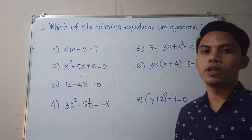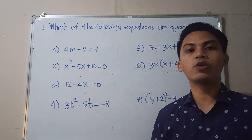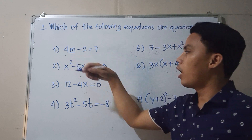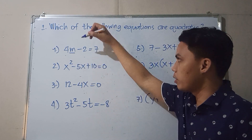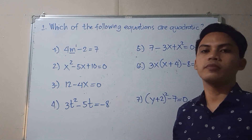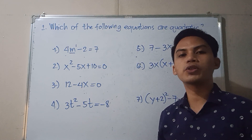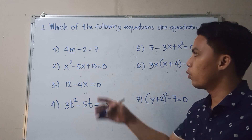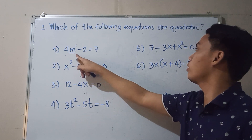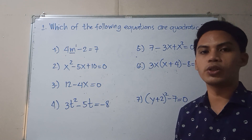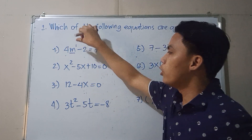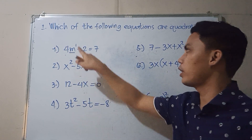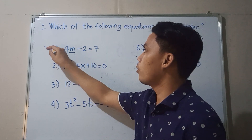Let's try number 1: 4m minus 2 is equal to 7. Looking at the variable m, the exponent of m is 1 or positive 1. Since the definition of a quadratic equation requires the degree to be 2, number 1 is not a quadratic equation. Since the highest exponent is 1, this is a linear equation.